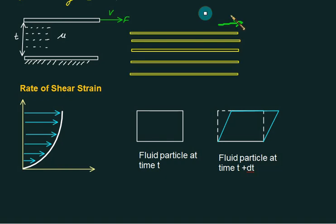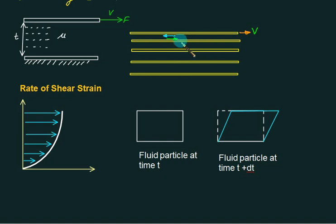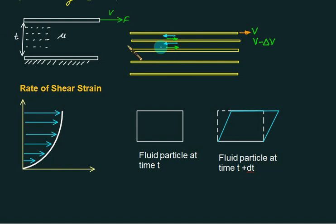Suppose the top plate is moving in the rightward direction. This plate will try to oppose in the opposite direction — action and reaction. If the top plate moves with velocity V, it will overcome the resistance and drag the layer below it in the same direction, but that layer's velocity will be slightly reduced by delta. Each successive layer tries to pull the one below it, but the velocity keeps decreasing by delta each time. The bottom plate remains stationary because it is fixed.